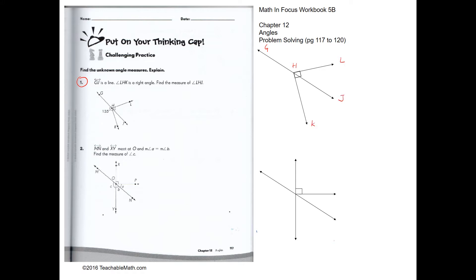These are all the dimensions here and this is 155 degrees. Our job is to find the measure of angle LHJ. LHJ is here, so we have to find this angle. The first step would be to find angle KHJ first.